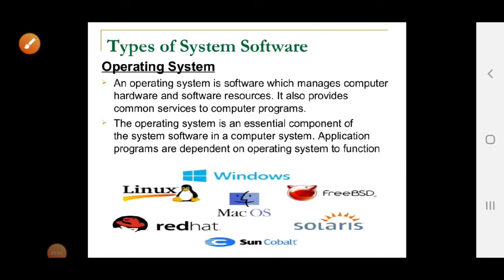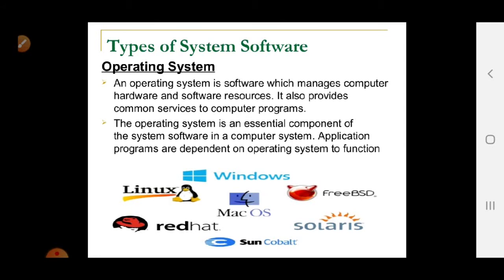An operating system is a software that manages computer hardware and software resources and provides common services to computer programs. System software works between hardware and application software. The operating system is an essential component — without it, a computer cannot run. Application programs are dependent on the operating system to function.